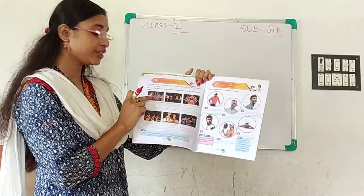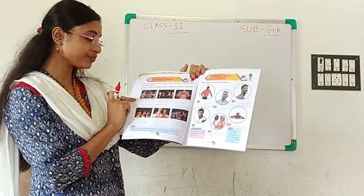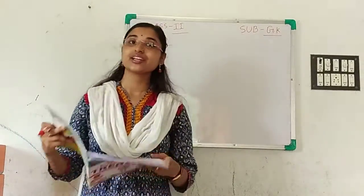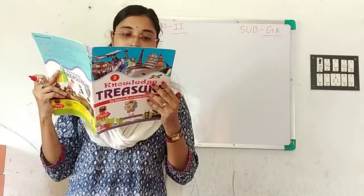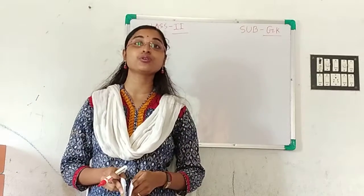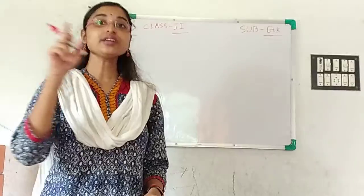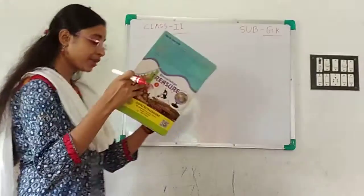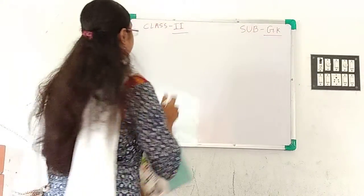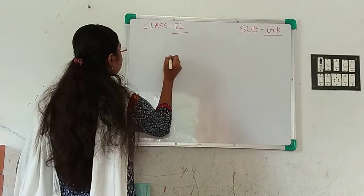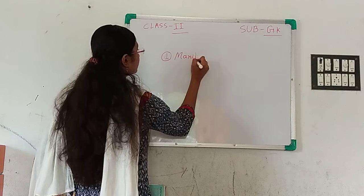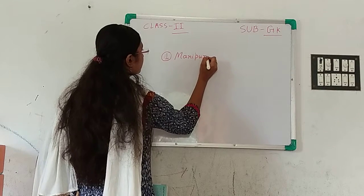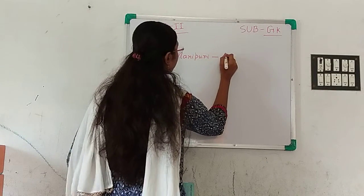So first, which dance form is this? Can you tell me? Manipuri. The Ras Lila, also referred to as Manipuri dance, is one of the major Indian classical dance forms, originating from the state of Manipur. So number 1: Manipuri, state Manipur.